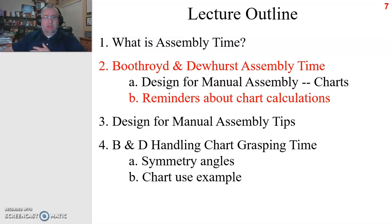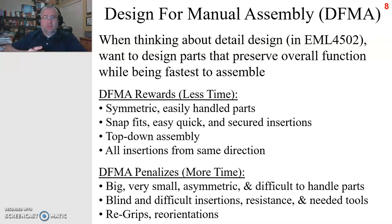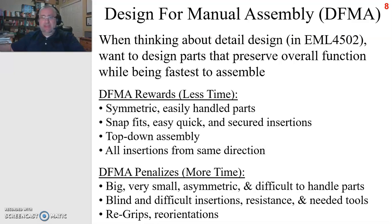Just a couple of reminders about how these charts work. The charts are based on Design for Manual Assembly, DFMA, which will become very important in EML 4501 — the next course in the capstone design sequence — where you'll be responsible for putting parts together into sub-assemblies, assemblies, and ultimately prototype products. There's always a possibility that something from 4501 or 4502 might become a commercial product, so it's important even at the prototype stage to think about design for manual assembly to keep assembly fast and cost down.